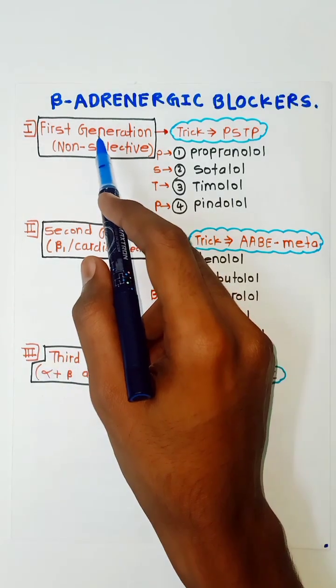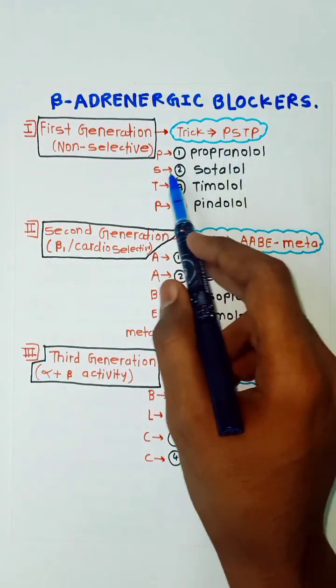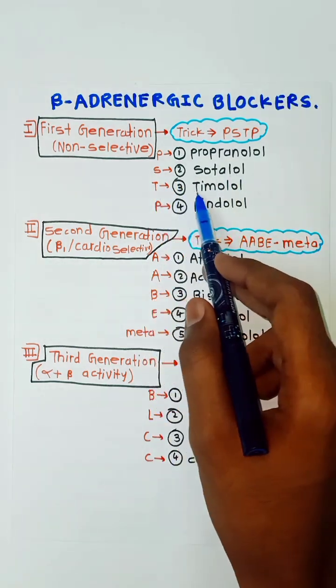In first generation, the trick to remember is PSTP: P for propranolol, S for sotalol, T for timolol, and P for pindolol.